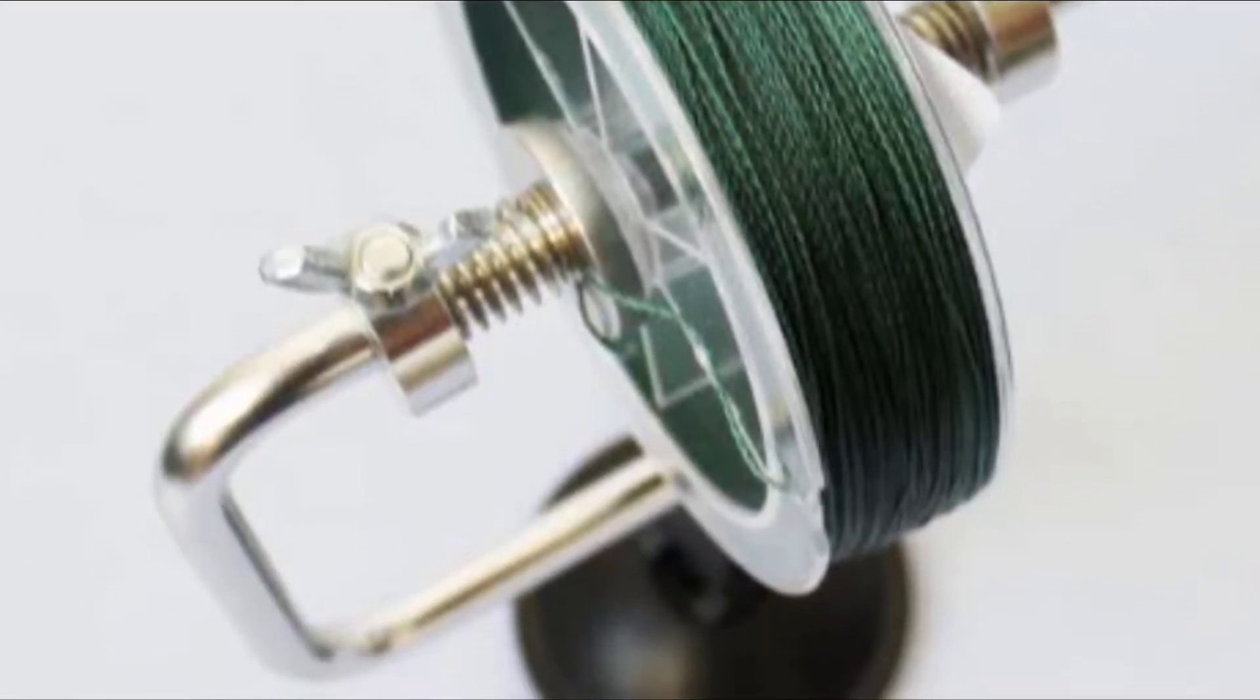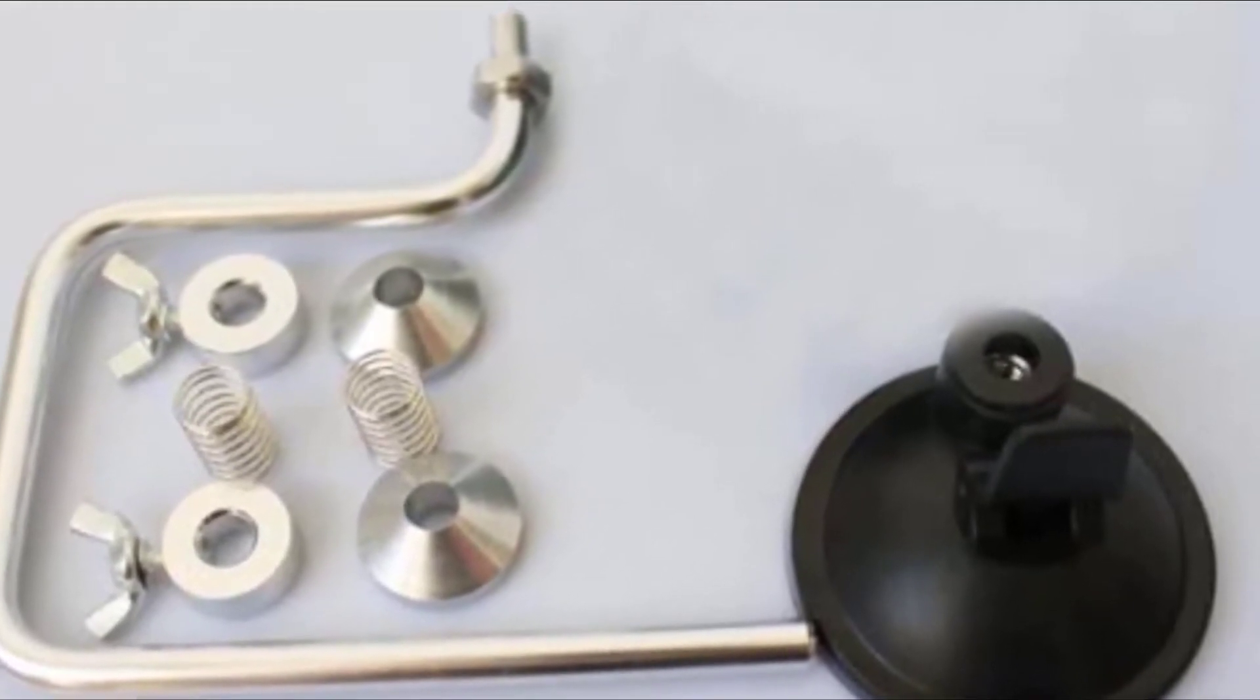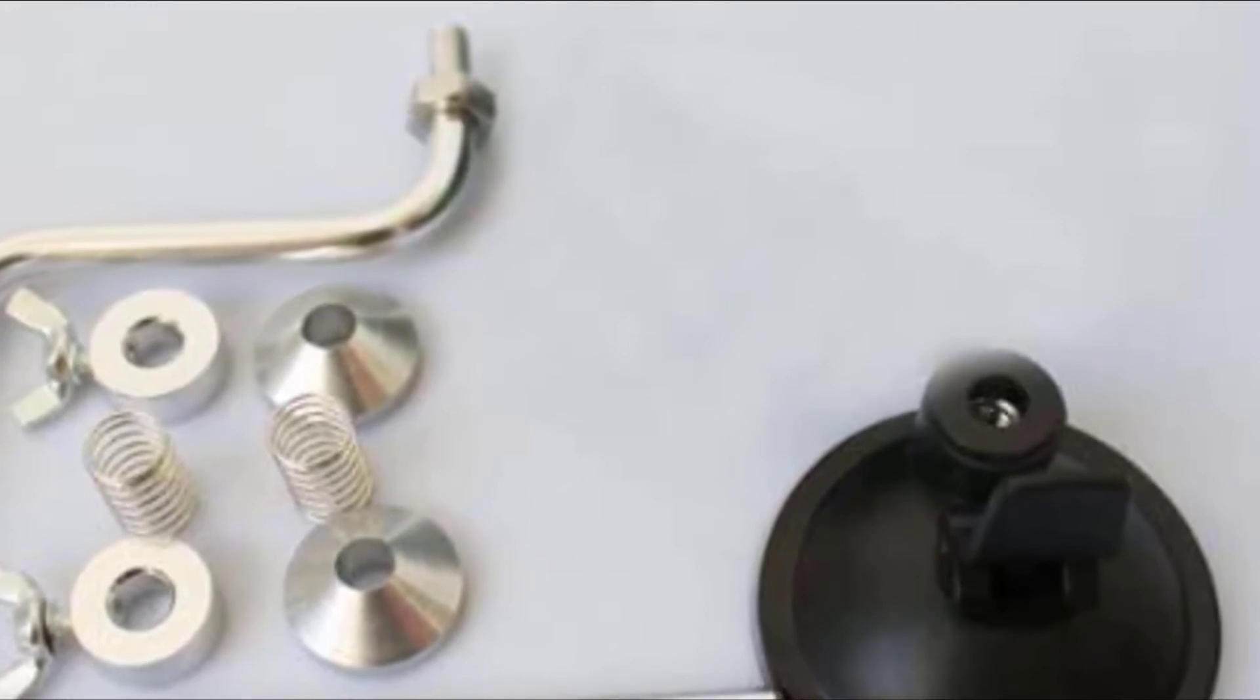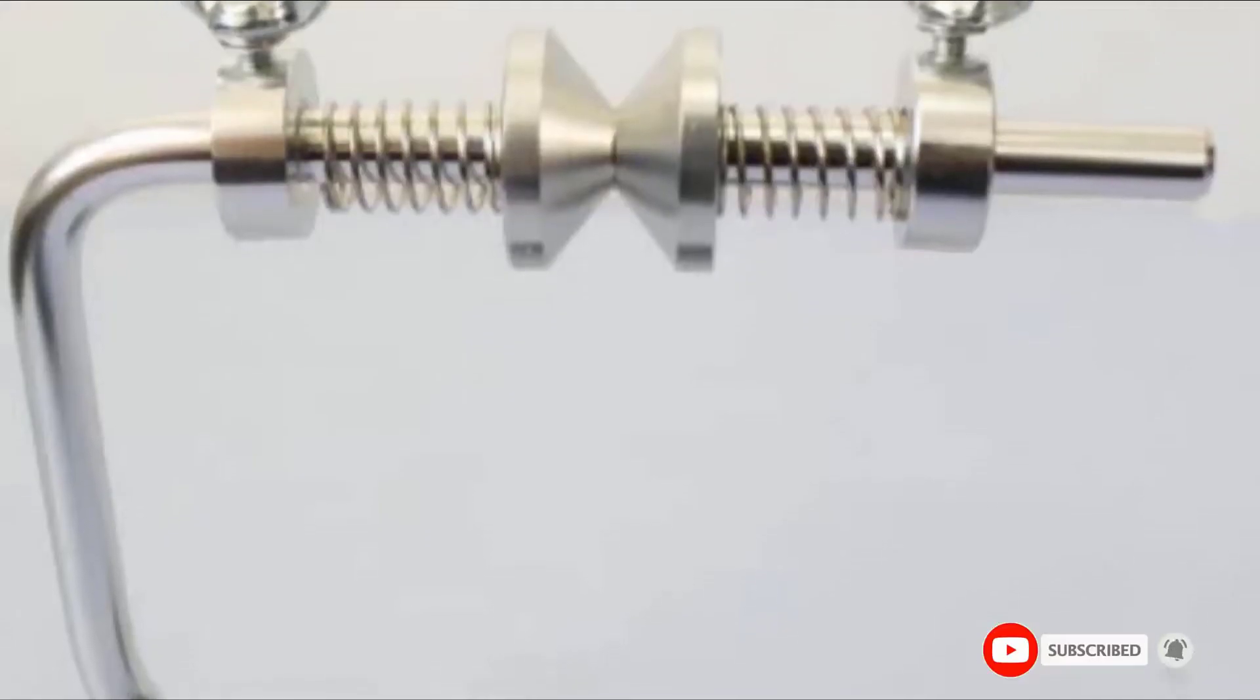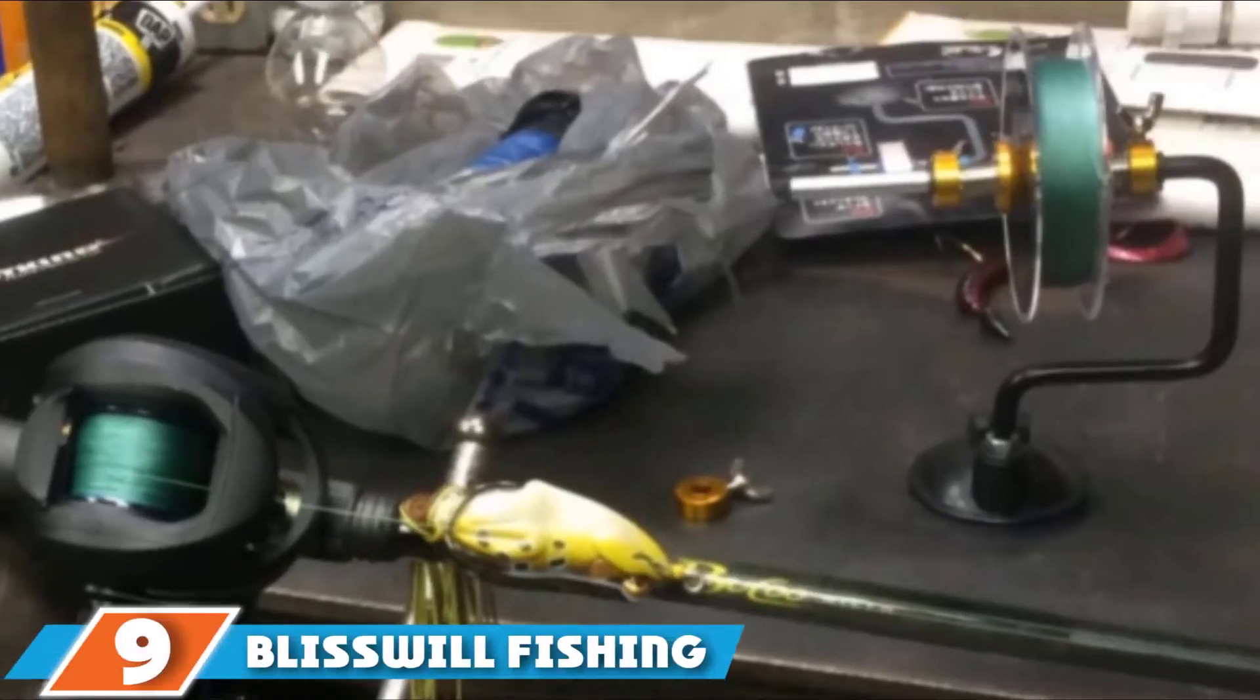The newly designed suction cup on the line spooling machine also features a strong build that allows it to attach to any smooth surface, especially wet glass. The spooler's screw is also made of aluminum alloy which gives it incredible weather resistant properties.